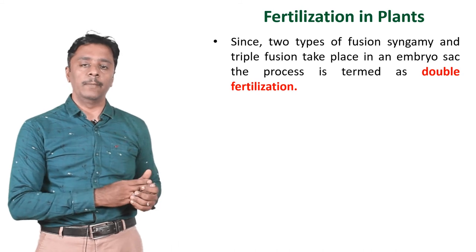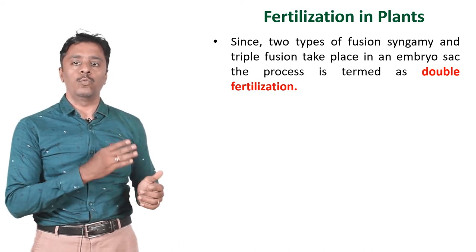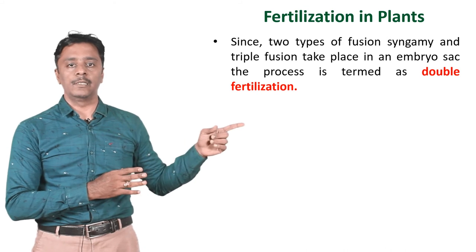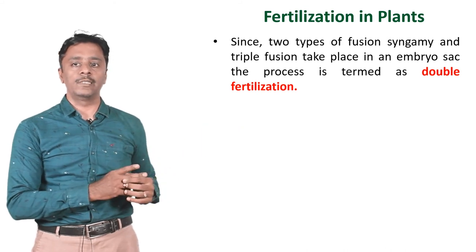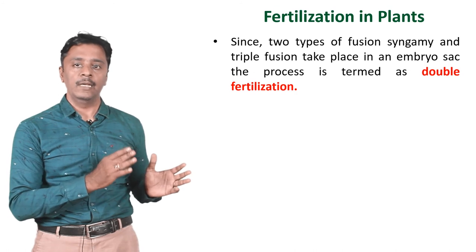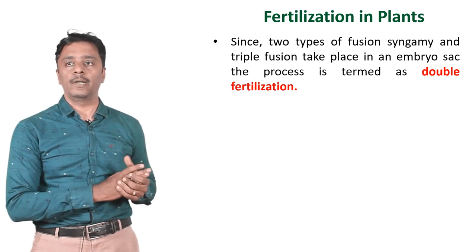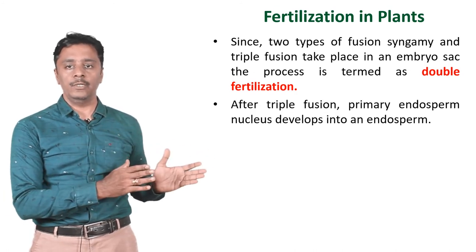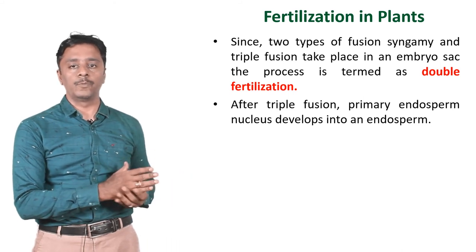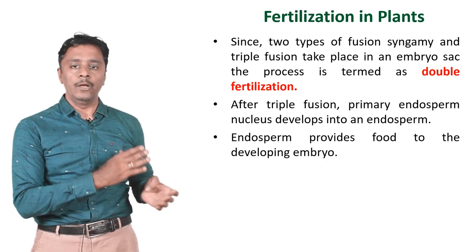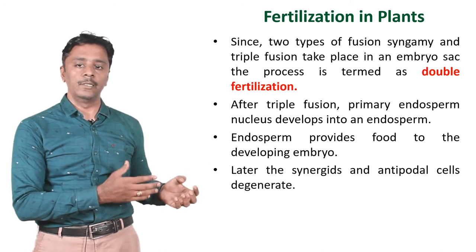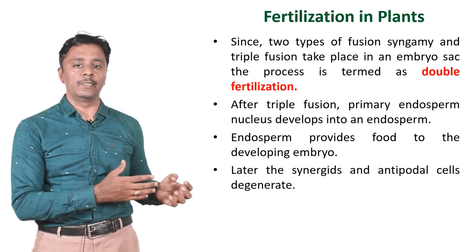After triple fusion, the primary endosperm nucleus develops into an endosperm. Endosperm provides food to the developing embryo. Later, the synergids and antipodal cells degenerate. The significance of fertilization: it stimulates the ovary to develop into fruit; it helps in development of new characters from two different individuals.